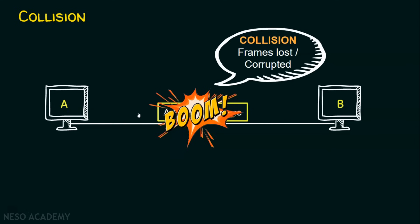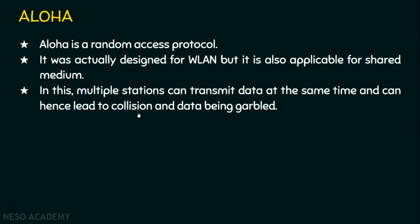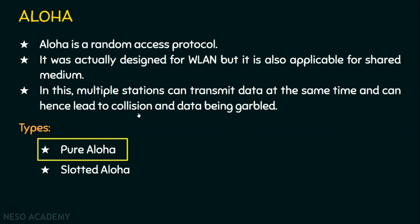Since aloha is a random access protocol, any station can transmit data at any time, so obviously it leads to collision. Somehow the aloha protocol has to handle this. We have basically two types of aloha: number one, pure aloha; and number two, slotted aloha. In today's lecture, we are going to focus only on pure aloha.